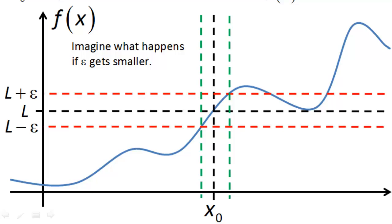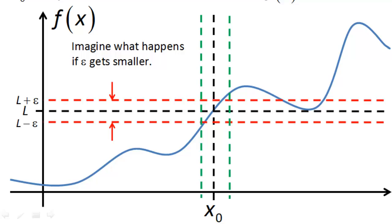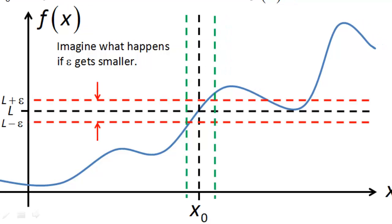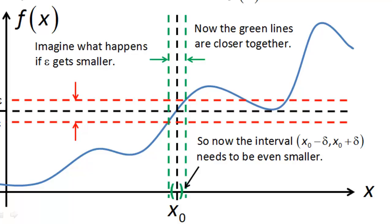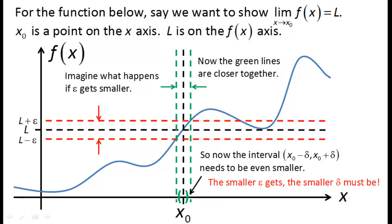Just before we move on, imagine what happens if epsilon gets smaller. The two red lines get pushed closer together, and the two green lines also get pushed closer together, since they show where the function enters and leaves the red zone. This means the interval from x0 minus delta to x0 plus delta needs to become even smaller to fit between the green lines. So the key point is: if epsilon gets smaller, delta must get smaller as well. In the second part of this video we'll look at some examples of how to prove limits.